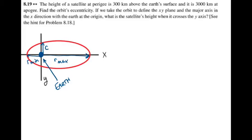If we take the orbit to define the xy plane and the major axis in the x direction with the Earth at the origin, as in my drawing, what is the satellite's height when it crosses the y-axis? This is the vector that I've labeled c.